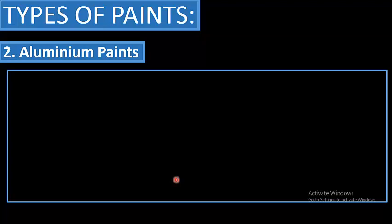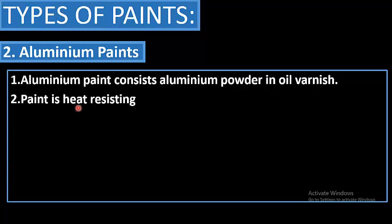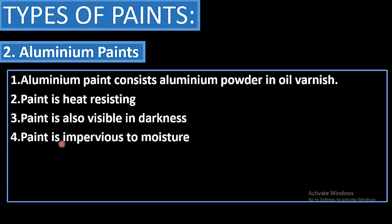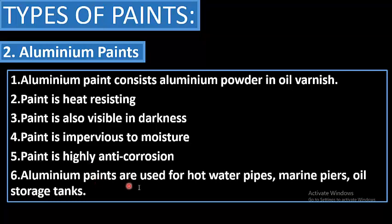Aluminium paints consist of aluminium powder in oil varnish. Aluminium paint is heat resistant, visible in darkness, impervious to moisture, and highly anti-corrosive. Aluminium paints are used for hot water pipes, marine piers, oil storage tanks, and similar applications.